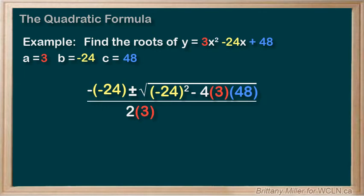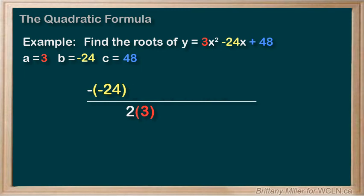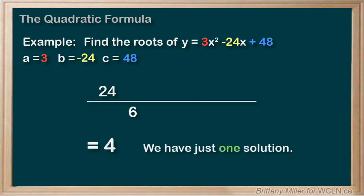These numbers are pretty big, so a calculator would be useful for this one. First, 24 squared is 576, and then 4 times 48 times 3 is also 576. Since 576 minus 576 equals 0, we can get rid of this whole square root part. So negative negative 24 is just 24, and then 2 times 3 is 6. 24 divided by 6 is 4. So this quadratic has one solution, x equals 4.